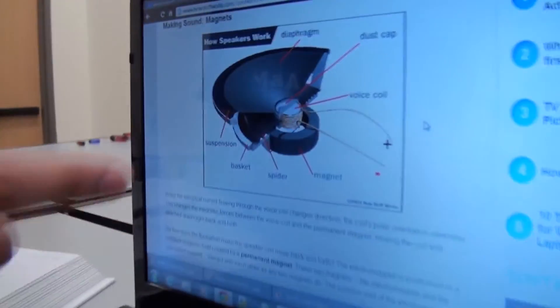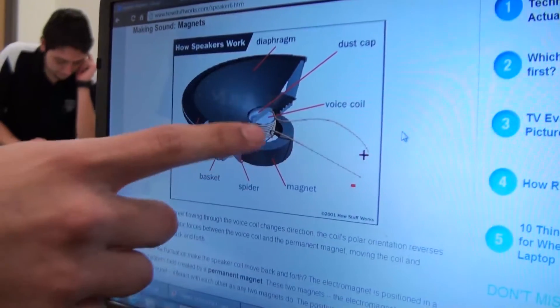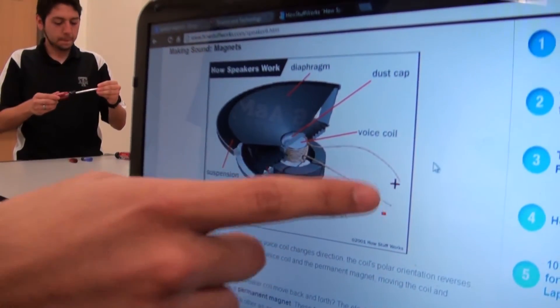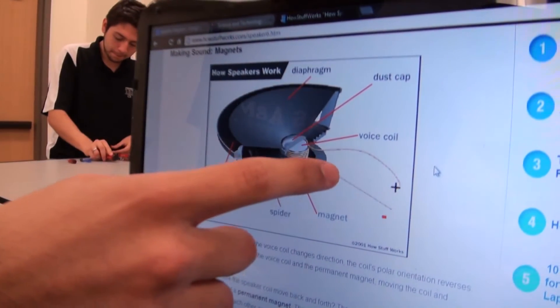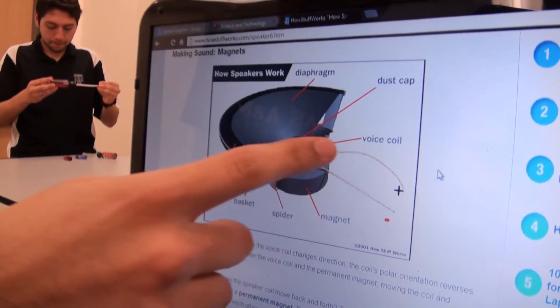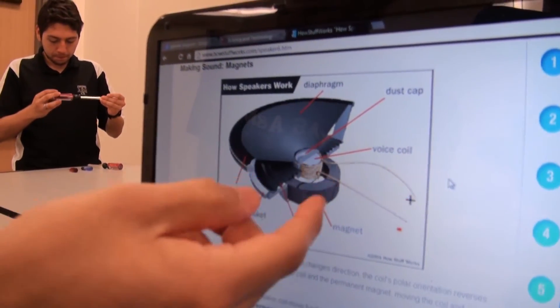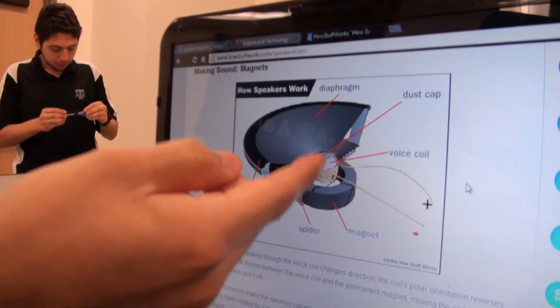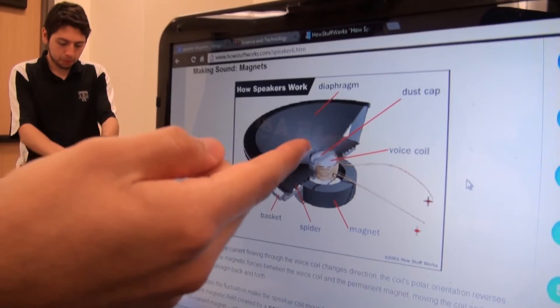A speaker is basically an electromagnet and a cone. The electromagnet is made up of coil wire and a permanent magnet. When current is supplied from the music source, it goes around the coil wire and creates a magnetic field and interacts with the permanent magnet, causing the vibrations in the cone, creating sound.